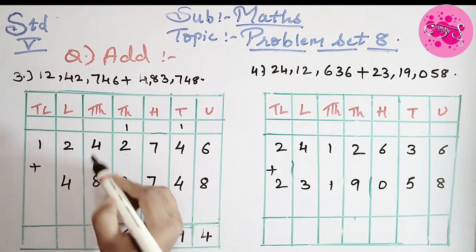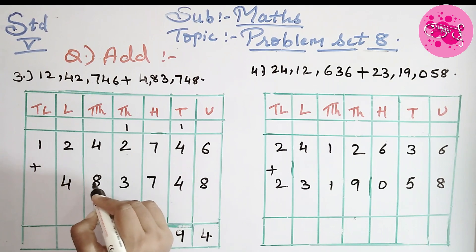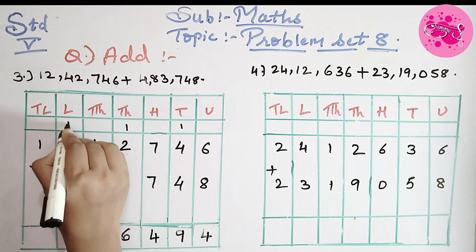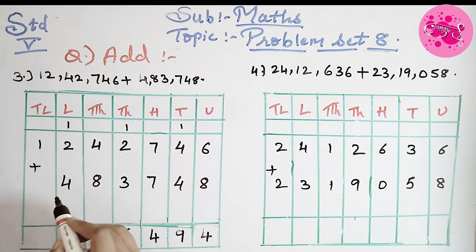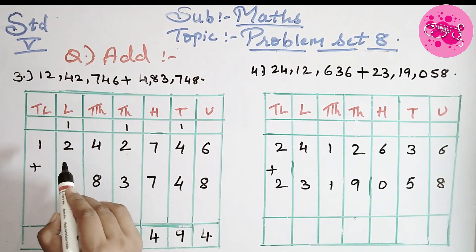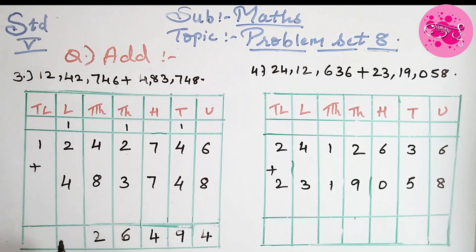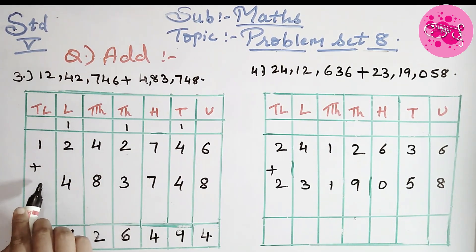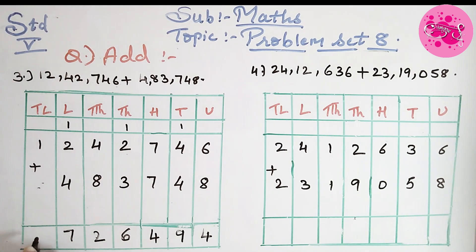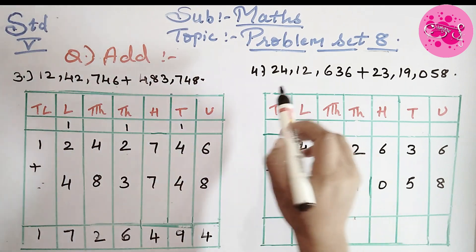8 plus 4 gives 12, so write 2 down and carry 1. Next is 4 plus 2 is 6, and adding the carried 1 gives 7. Write 7 down. And after 1 there is no number, so write 1 as it is. So we got the answer that is 17,26,494.